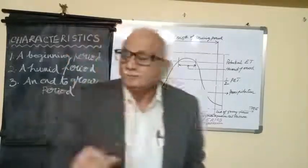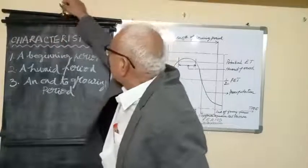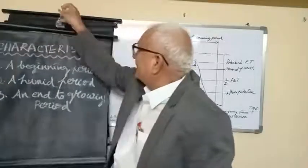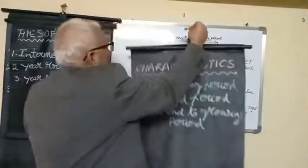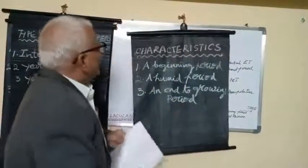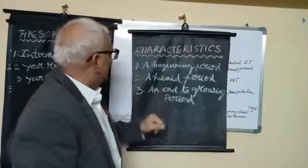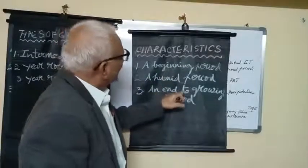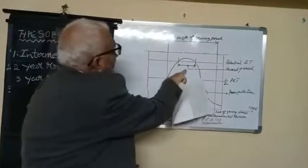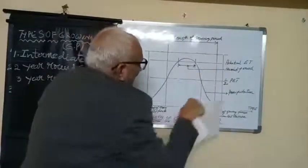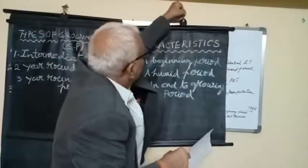Let us look at the characteristics of the length of growing period. For the growing period, there is a beginning period, a humid period, and an end of growing period. These are the basic characteristics of the length of growing season.